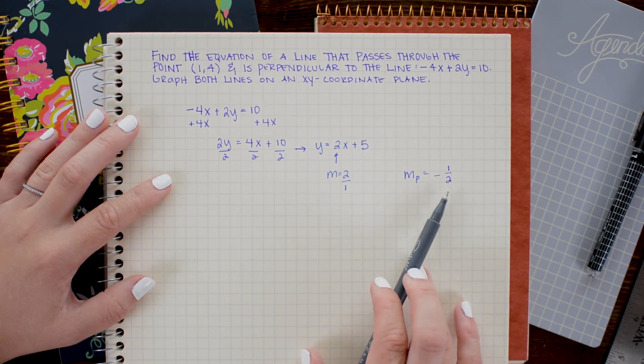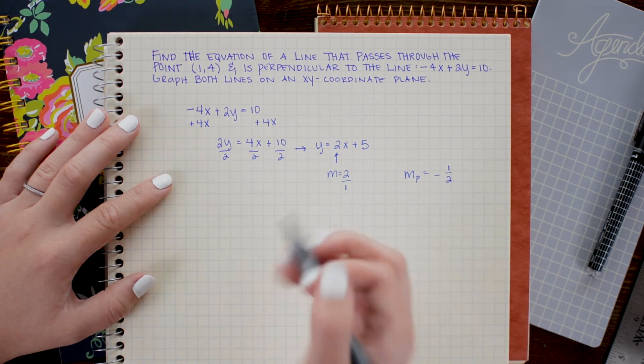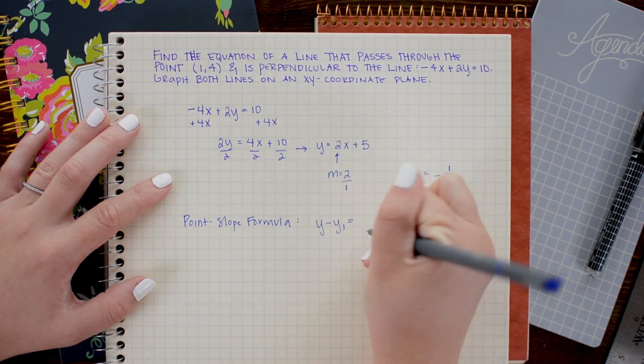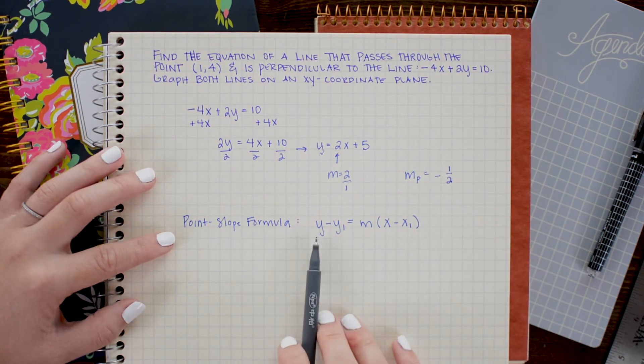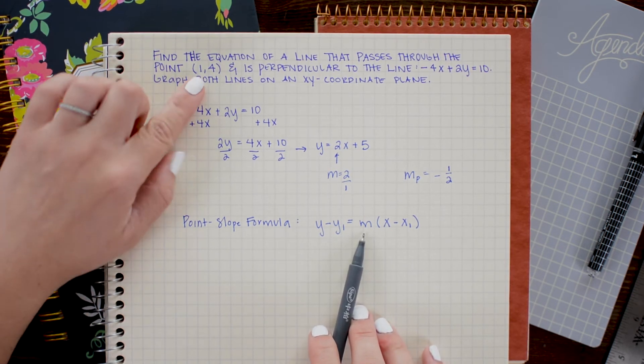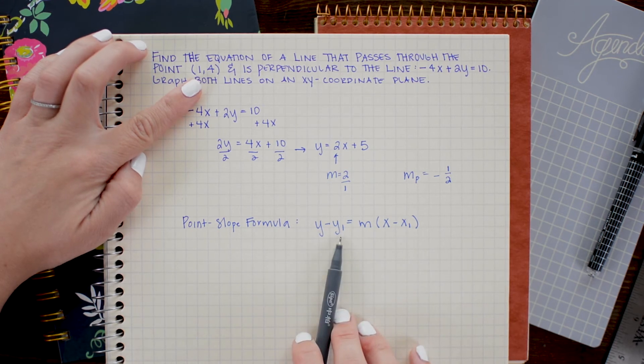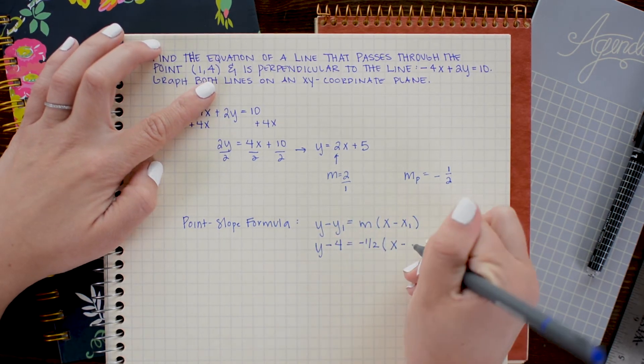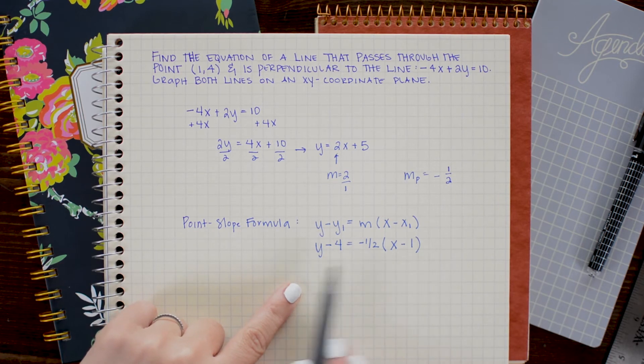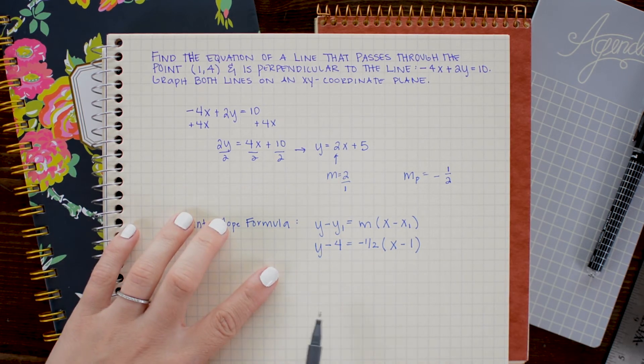Now I'm just going to plug in the slope and this point into the point-slope formula. Recall that in point-slope formula, the slope is m, and the point that we want to plug in will replace the x1 and y1. Next, I'm just going to solve for y so that I can get it in slope-intercept form, which will make it really easy to graph from in our final step.